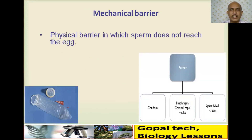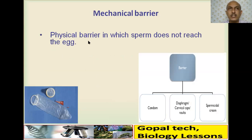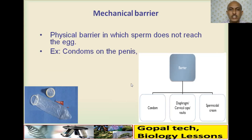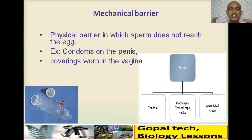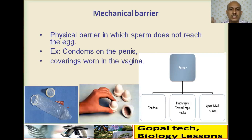Mechanical barrier methods include condoms, diaphragms, cervical caps, vaults, or spermicidal cream — these are physical barriers that prevent sperm from reaching the ovum. The best example is a condom on the penis, or covering rings in the vagina.